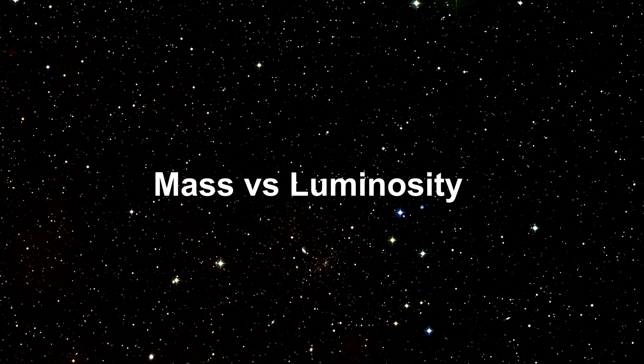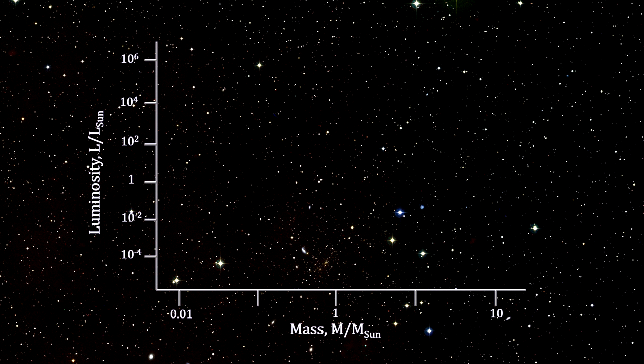Once the mass of enough binary stars were calculated, it became possible to plot mass versus luminosity on a graph. Here's what they found.